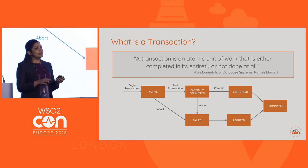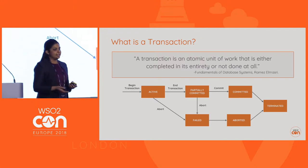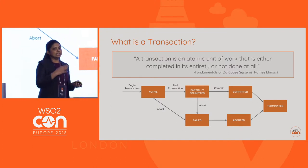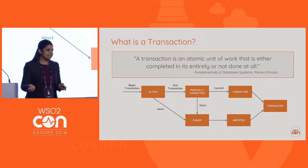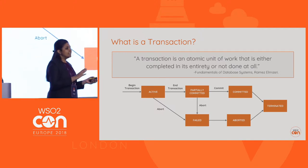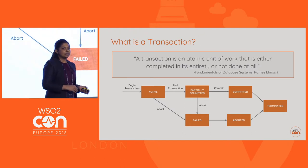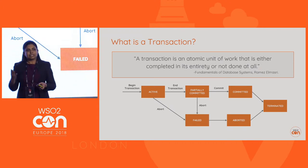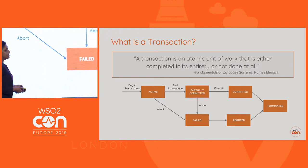In the active state, that is where the actual statement processing happens — like writing to a database or writing to a message queue. If all these operations are successful, it will go to the partially committed state, and eventually to the committed state. If one of these operations fails during the active state, it will go to the failed state. A user can also abort the transaction, which will also lead to the failed state and eventually the aborted state.